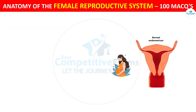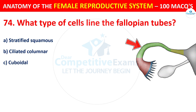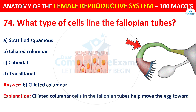Question number 74. What type of cells line the fallopian tubes? The correct answer is B — ciliated columnar cells. The ciliated columnar cells in the fallopian tubes help to move the egg toward the uterus.